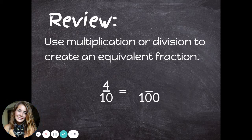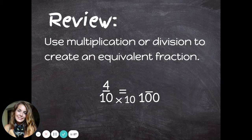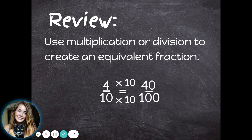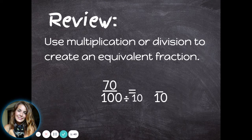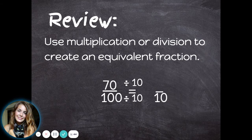In this example, the denominator ten was multiplied by ten to get to one-hundred. So if we do the same to the numerator, we can see that four-tenths is equivalent to forty-hundredths. This time, the denominator one-hundred was divided by ten to get to tenths. Let's do the same to the numerator — seventy-hundredths equals seven-tenths.